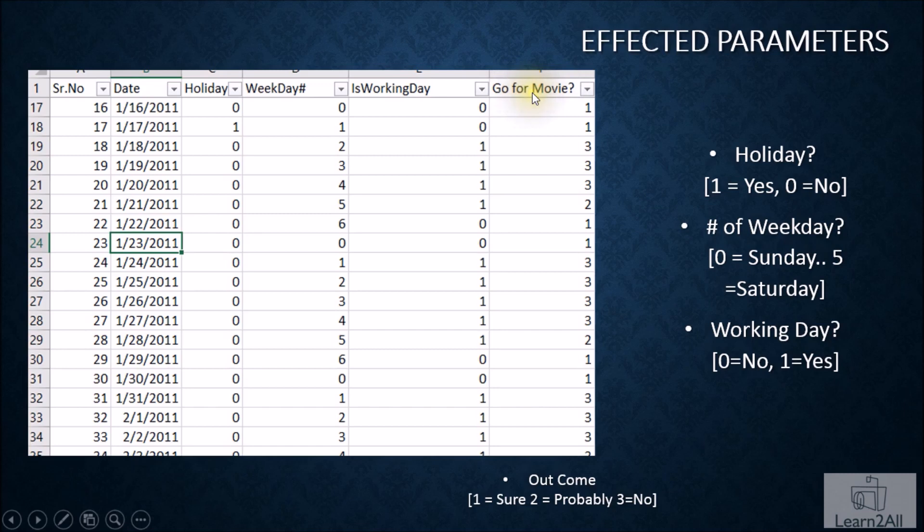Now they have defined one column 'go for a movie' which indicates the possibility. This is the historical data. They have observed these patterns: holiday, weekday, working day. Based on this pattern, they have observed that if there is a holiday, then people are more likely to go for a movie. If there is a weekday, then they are not going to watch a movie. And if the weekday number is five, Friday, then people will probably go for a movie. This type of observation they have recorded here.